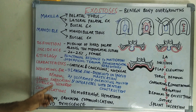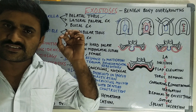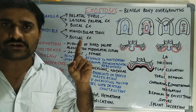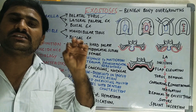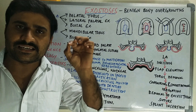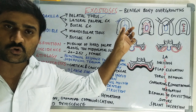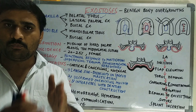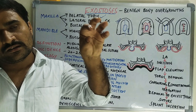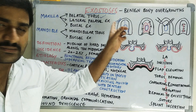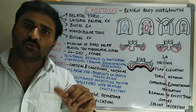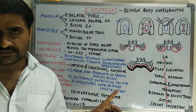Indications for removal: first, when the torus is large enough to interfere with speech or mastication — this is the most important indication. Second, when the overlying mucosa is ulcerated and not healing. Third, when it interferes with denture construction, especially if the palatal torus extends to the posterior palatal seal area, which is the most important landmark for obtaining retention when constructing complete dentures.